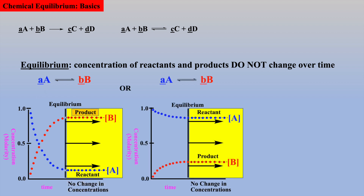In the diagram on the left, we see that products are very favored when equilibrium is reached. In the diagram on the right, we see that reactants are very favored when equilibrium is reached. Of course, one could imagine equilibriums in between these two scenarios.